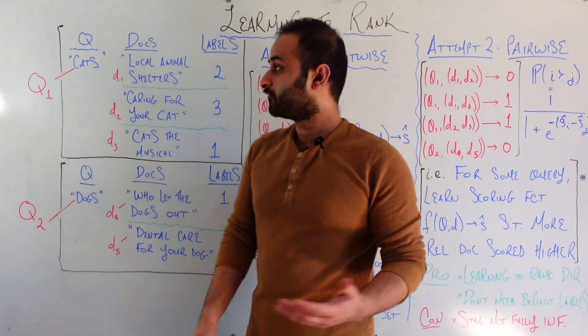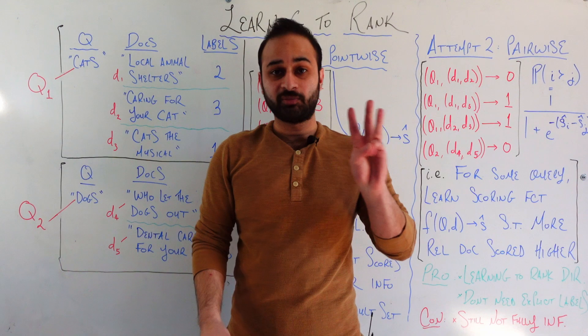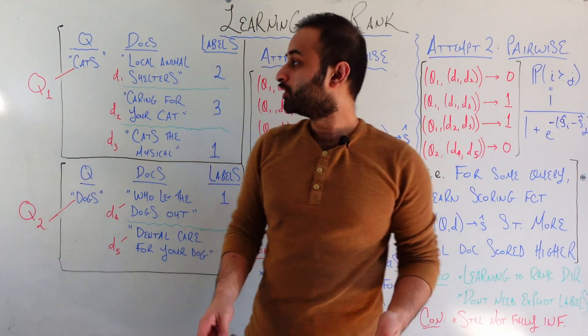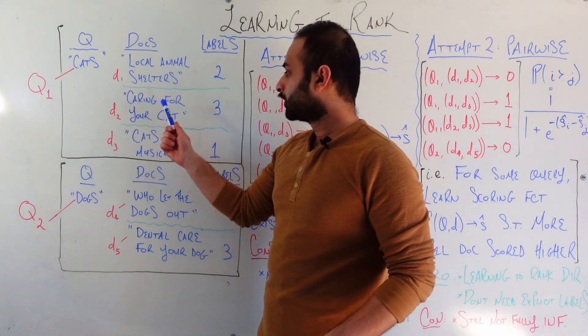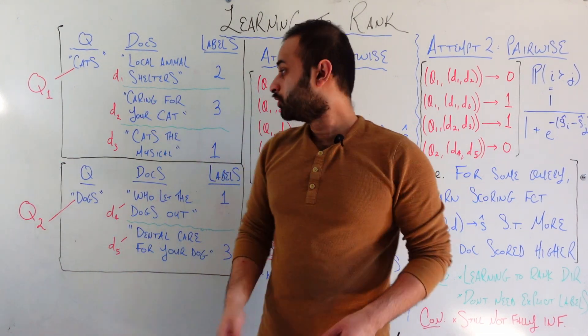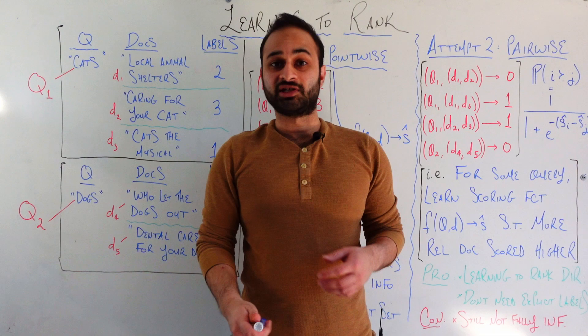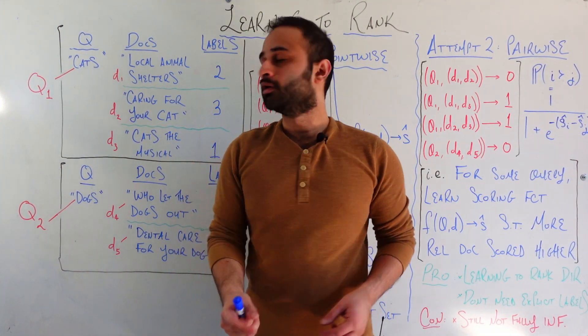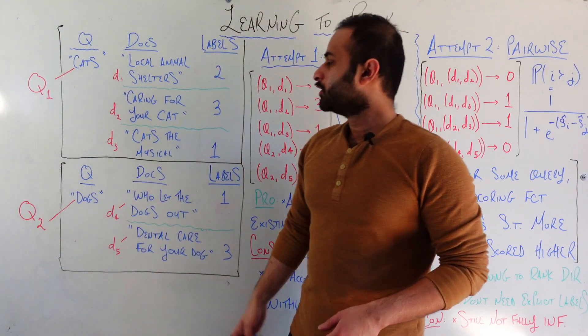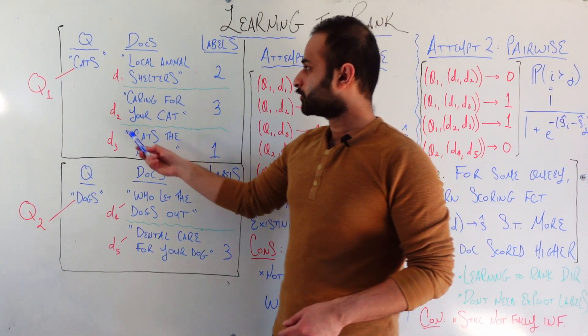And if you search for cats, there's three possible documents that could match: this document on local animal shelters, which we'll call D1, caring for your cat, which we'll call D2, or cats the musical, which we'll call D3. And this cat's query will be called Q1, which is query 1.